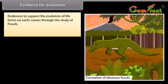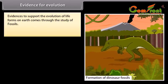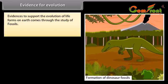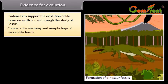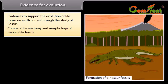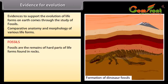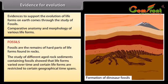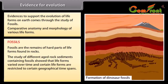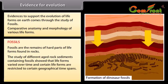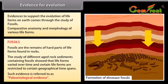Evidence for Evolution. Evidence to support the evolution of life forms on Earth comes through the study of fossils and comparative anatomy and morphology of various life forms. Fossils are the remains of hard parts of life forms found in rocks. The study of different-aged rock sediments containing fossils showed that life forms varied over time, and certain life forms are restricted to certain geographical time spans. Such evidence is referred to as paleontological evidence.